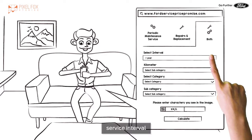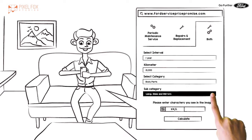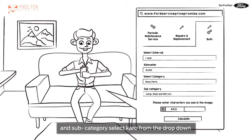Ab bas, service interval, kilometers, parts ki category and sub category select karo from the drop down. And you know this by now, click calculate.